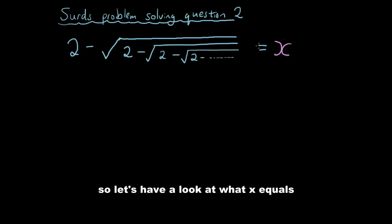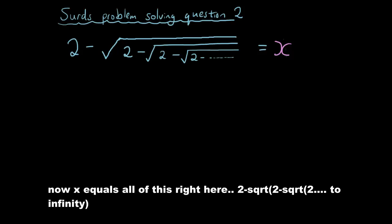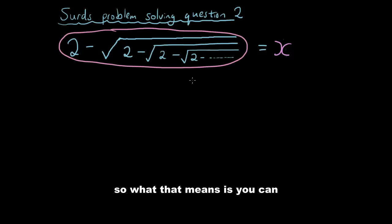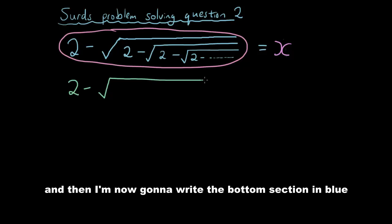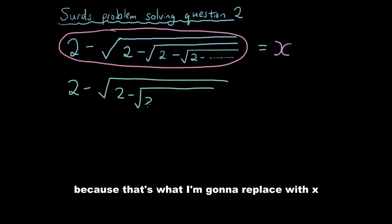Let's have a look at what x equals. x equals all of this right here: 2 minus square root of 2 minus square root of 2 minus... to infinity. What that means is you can replace... I'm just going to write this all out again. I have 2 minus square root of, and then I'm now going to write the bottom section in blue because that's what I'm going to replace with x.